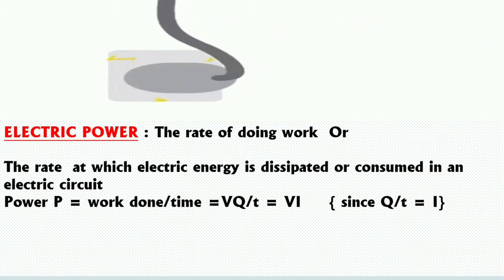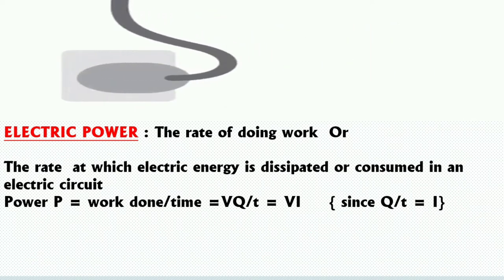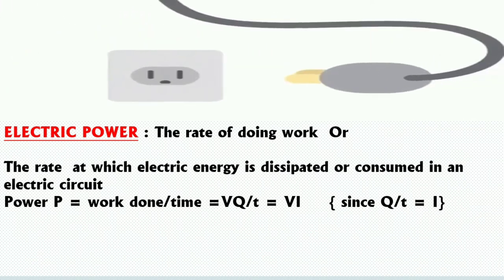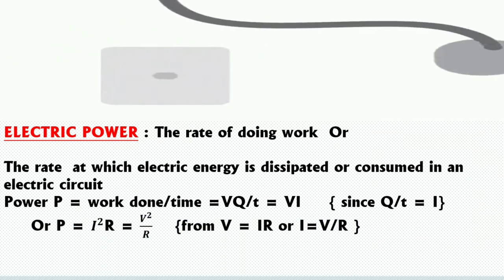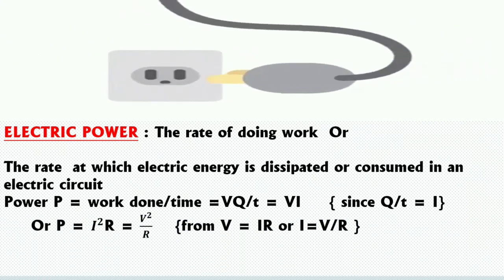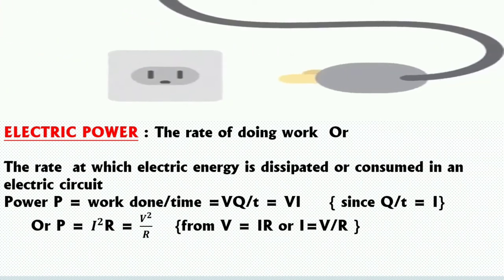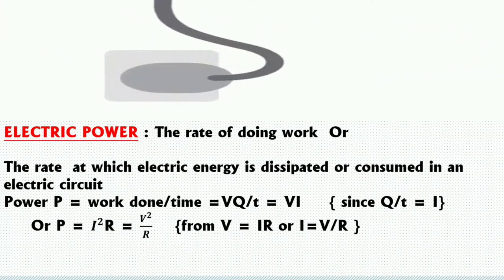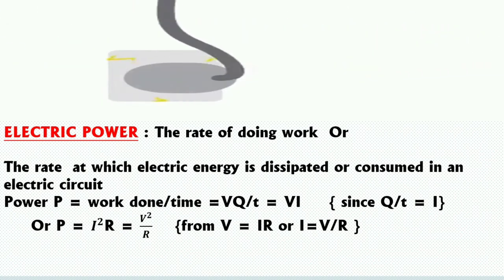The work done in moving the charge Q at a potential difference V is equal to VQ upon t, which equals the product of voltage and current. Substituting for V as IR or I as V/R from Ohm's law, we get electric power equals I²R or V²/R.